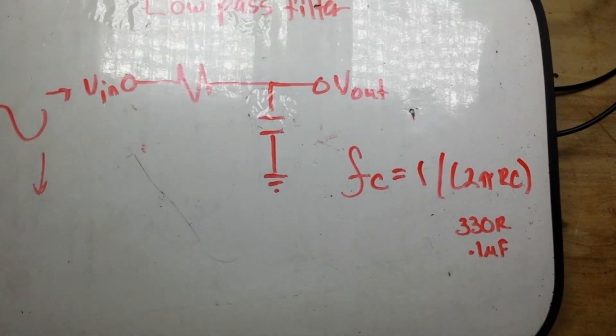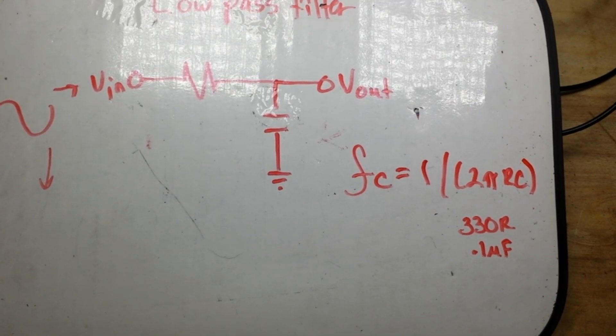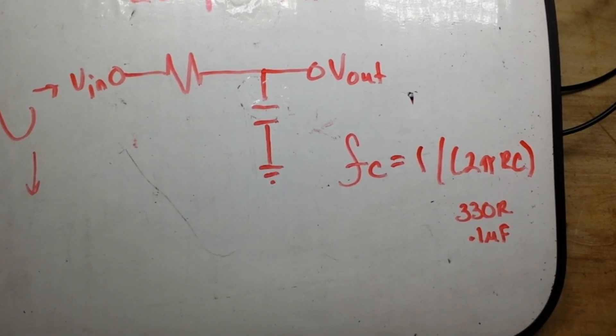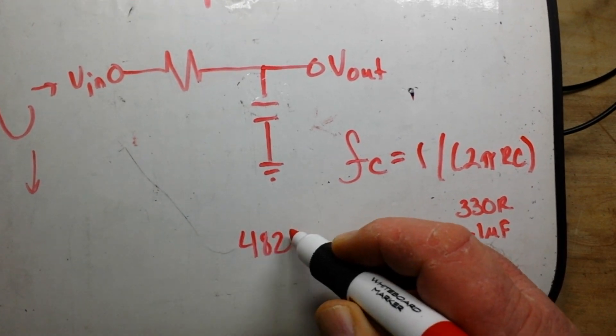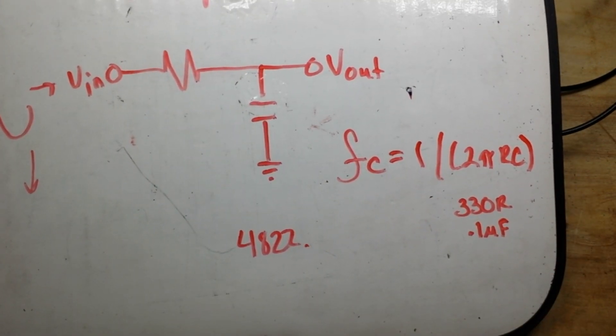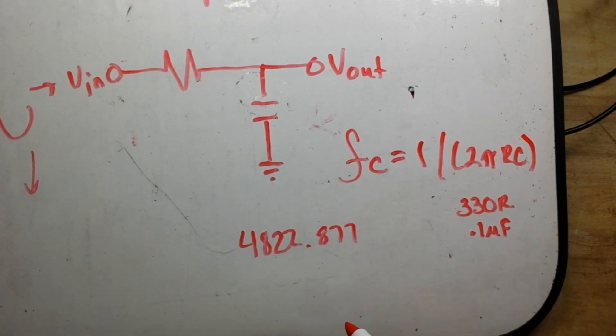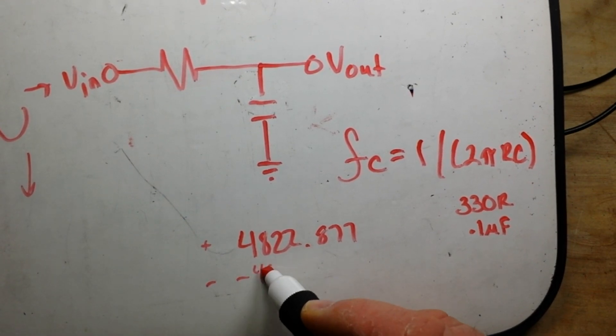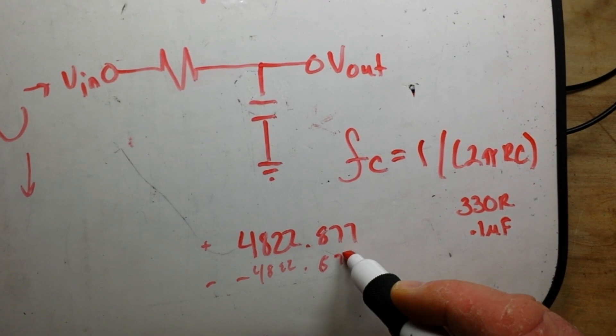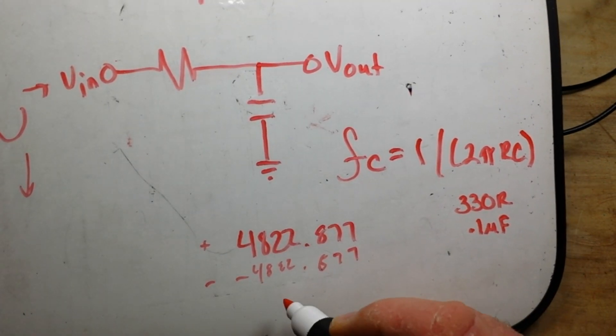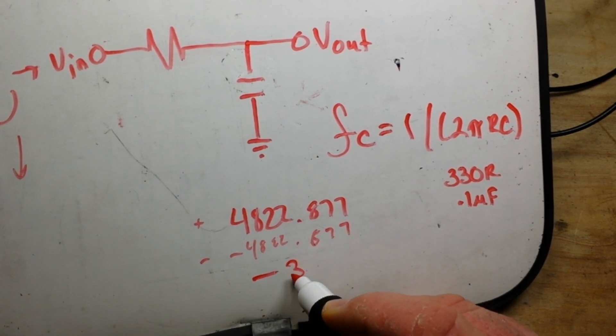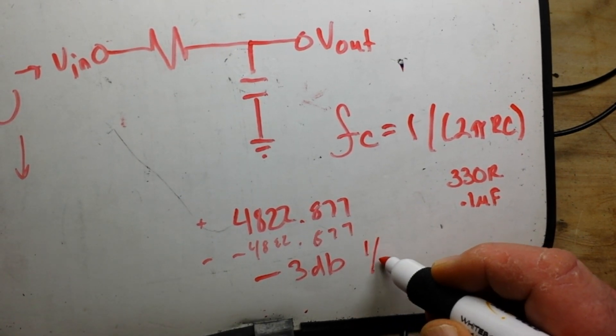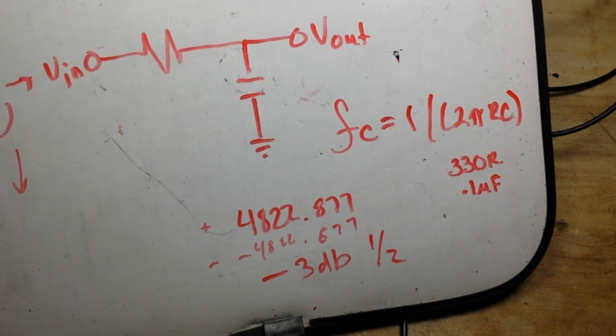Anyway, if we work on this for a couple seconds and do the math, and I'll leave you to do that yourself, we are going to get a cutoff frequency that's pretty close of 4822.877, and that will of course be our positive pole, and our negative pole will be minus 4822.877. What that is going to be is what's called our minus 3 dB point. That's where we have cut the power in half.